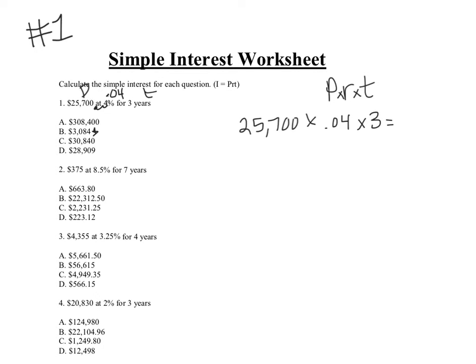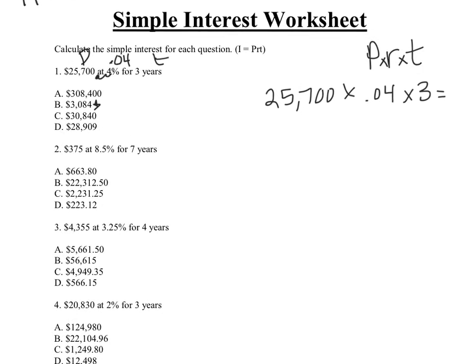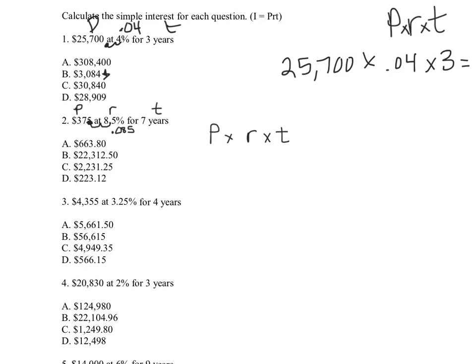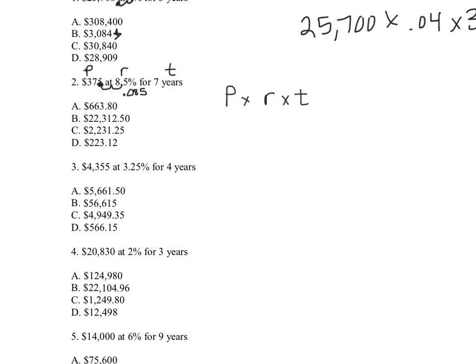Same thing on number two. I've got the P, this is the R, but I have to do something. I have to take that decimal and move it two spaces to the left, so it's really 0.085. And then that's the time, so P times R times T. Remember that percent, even if there's already a decimal, if it has the percent sign behind it, it's not in decimal form yet. So move it two spaces to the left, or put 8.5 divided by 100. Either way.